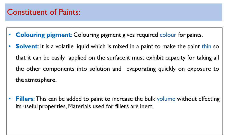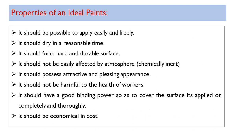Fillers, as the name suggests, are added to paint to increase the bulk volume without affecting its useful properties. The materials used for fillers are inert. The only use of filler is to increase the volume of the paint — it is inert and has no effect on the properties of the paint.